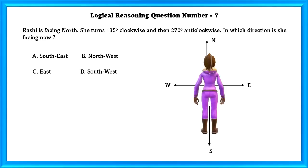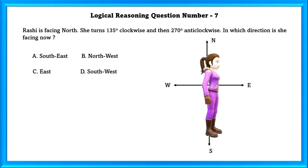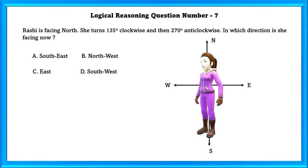So Rashi is facing the North Side. She turns 135 degree clockwise and 270 degree anticlockwise. The direction she is facing now is South West.